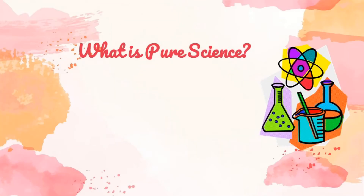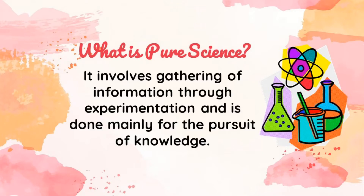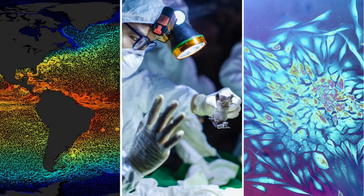Let's first talk about pure science. Pure science involves the gathering of information through experimentation and is done mainly for the pursuit of knowledge. An example of pure science is scientists studying the origin of coronavirus disease, or the so-called COVID-19.